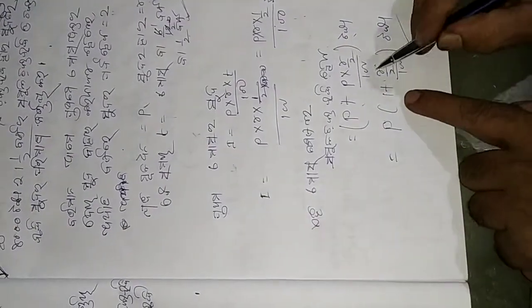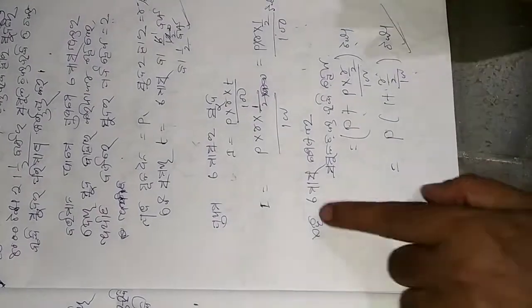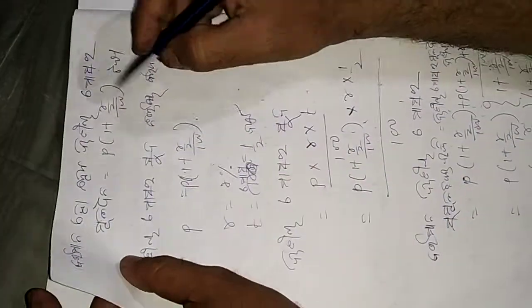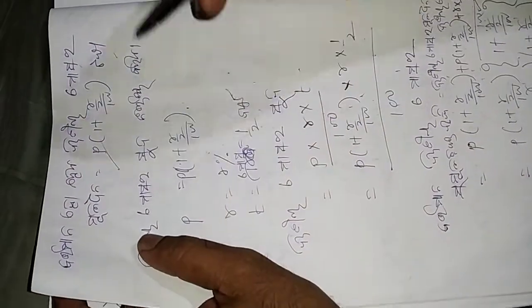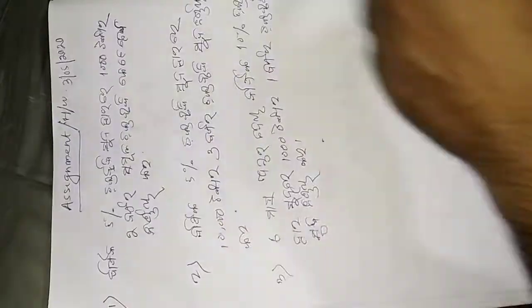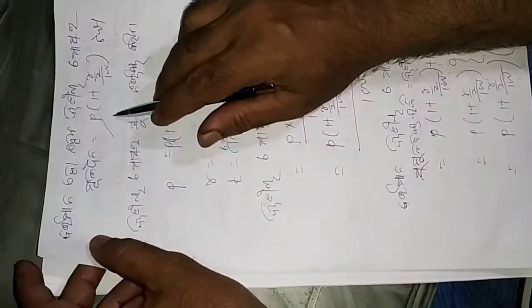Then, P into 1 plus R by 2 by 100 is the amount at the end of the first six months. The first period of six months gives us this value.